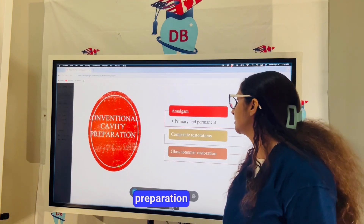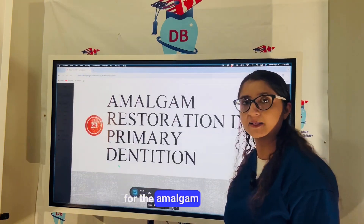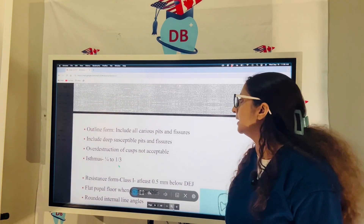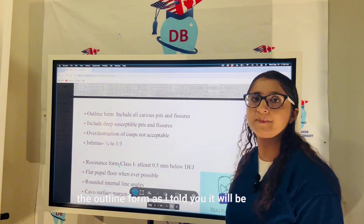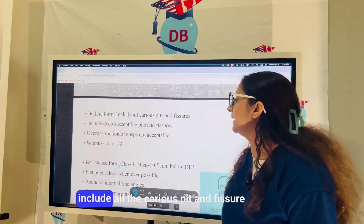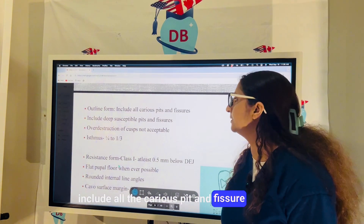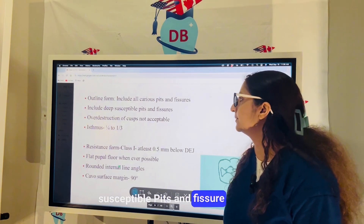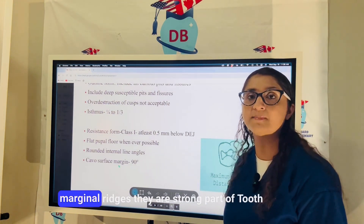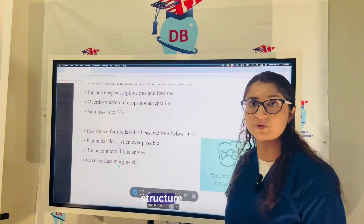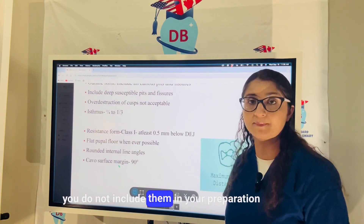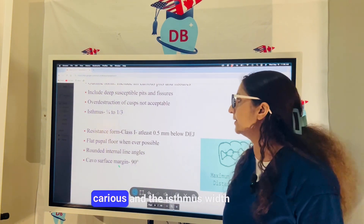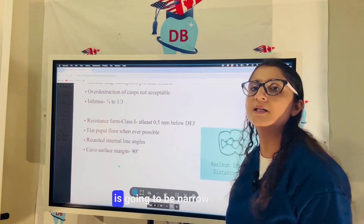For conventional cavity preparation for amalgam restoration in primary dentition, the outline form will include extension for prevention — all the carious pits and fissures, including deep susceptible pits and fissures. However, cusps and marginal ridges are strong parts of the tooth structure, so you do not include them in your preparation unless they are carious.